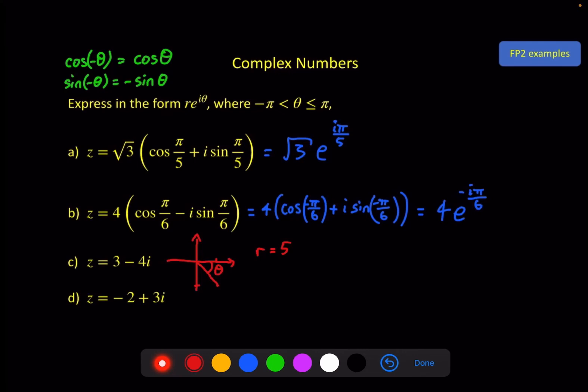Don't forget because it's going clockwise, that will be a negative, which is equal to negative 0.927 to 3 decimal places. Now we've got our information. We can say that z is equal to 5 times e to the i theta minus 0.927i.